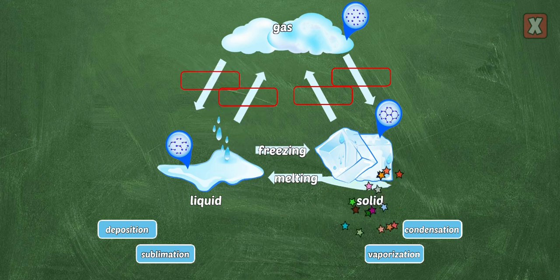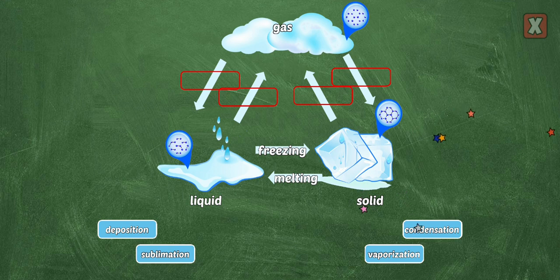In a solid, molecules are held tightly together and don't move easily. For example, ice is a solid.